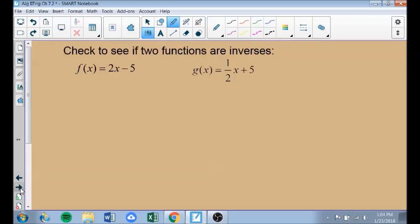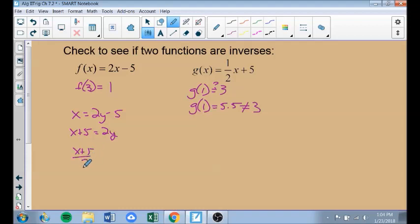Let's check to see if these two functions are inverses. There's two ways to do this. You could graph it and see if they are reflections over the line y equals x. One of them is, let's just do f of 3. f of 3 gets us 1. Then g of 1 should get us 3. g of 1 doesn't get us 3 because 1 half times 1 is a half plus 5 is 5.5. These are not inverses. But let's also just identify what the inverse is. So x equals 2y minus 5. I'm going to add 5 to both sides. Then divide everything by 2. This is what the inverse should be. And this is not this. They are not inverses.